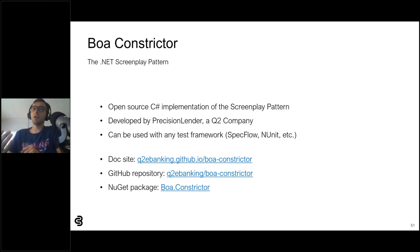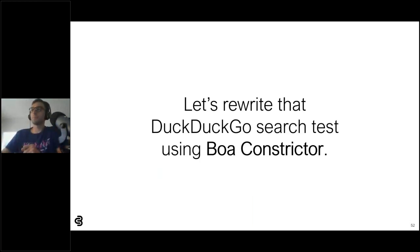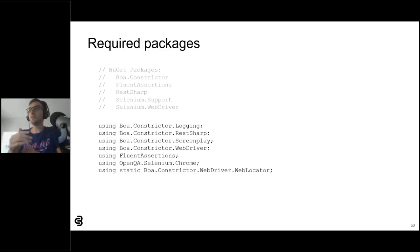Boa Constrictor is an open-source C# implementation of the screenplay pattern that my team and I developed at Precision Lender. It is the cornerstone of PL's end-to-end test automation solution. It can be used with any .NET test framework, like SpecFlow or NUnit. The project has a rich doc site hosted using GitHub Pages. The GitHub repository is at q2ebank/boa-constrictor. Let's rewrite that DuckDuckGo search test from before, but this time using Boa Constrictor. The first step is to install the Boa Constrictor, RestSharp, and Selenium WebDriver NuGet packages.